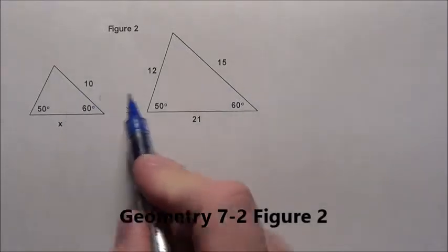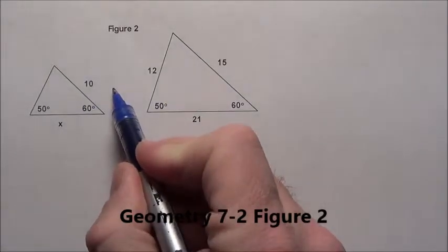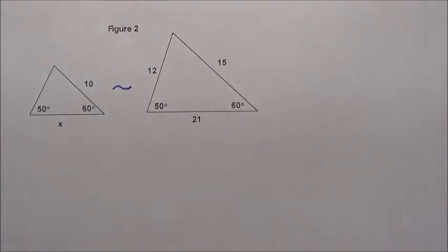Here in Figure 2 we have these two triangles that are similar to one another, and that's the symbol right there, a little squiggle we use to say they are similar to one another.